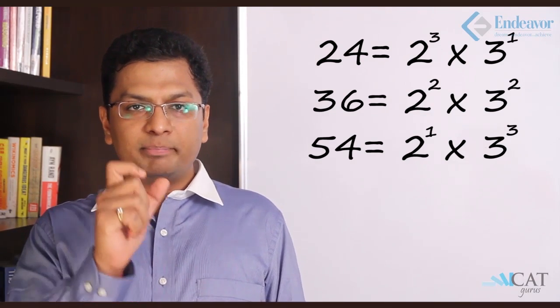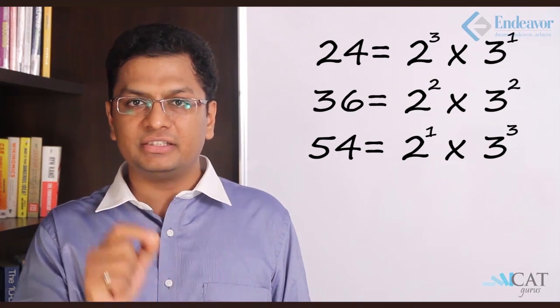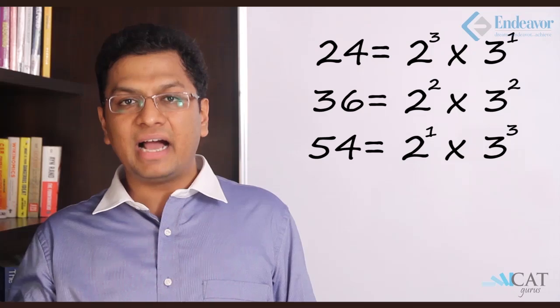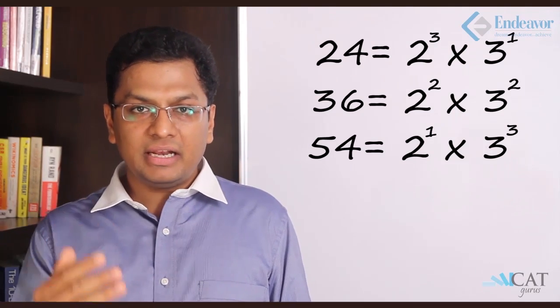So if you look at there are 2 factors, 2 and 3. So 2 to the power 3 in the first case, 2 in the second case, 1 in the third case. The highest across them is 2 to the power 3. So we take that number. Let's take 3.